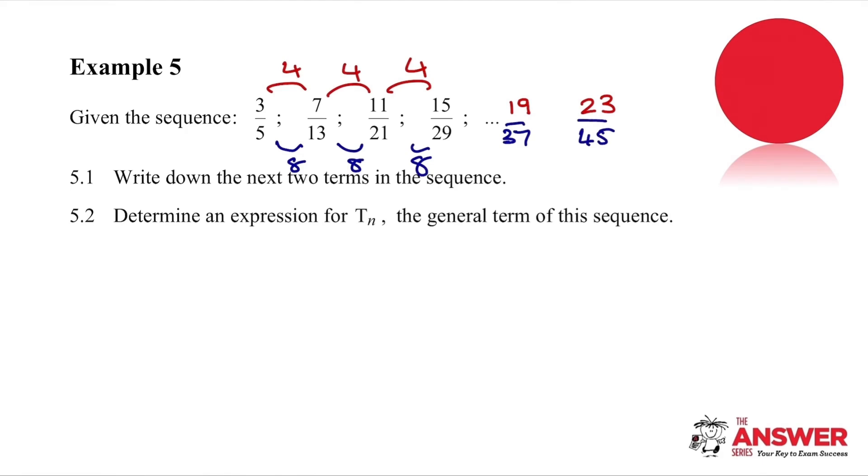To create a formula, we need to work independently with the numerator and the denominator. So we are simply going to take our time. We know the numerator is going to be 4n because the coefficient is the common difference. Now we're wanting to get a first term of 3, but if we substitute 1, we will get 4. So we simply subtract 1 to make that work.